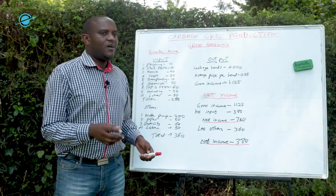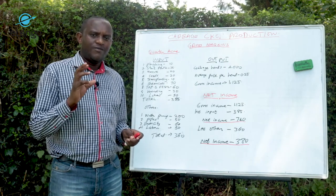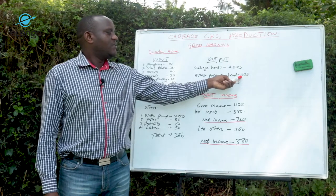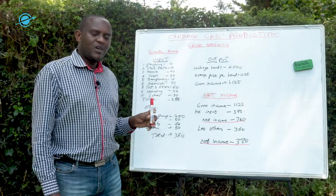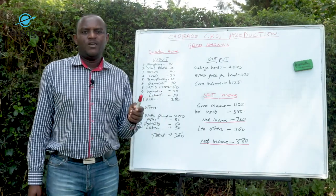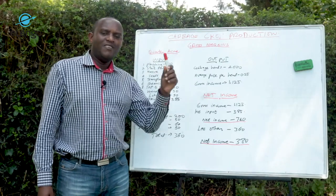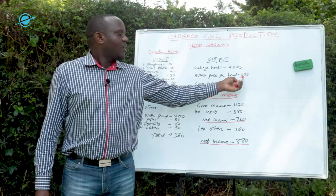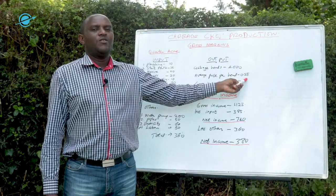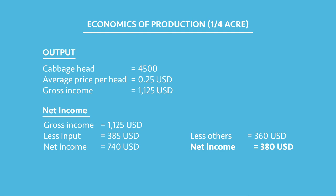There is also something important to consider. I've put the average price per head at $0.25. If you do good timing — for example, by doing irrigation so your cabbage is ready when supply in the market is low, or by planting early so your cabbage enters the market before others — you can fetch a good price. In some instances, you may sell as high as $0.60, or $0.40, or $0.30. I've put $0.25 as the low end, but most of the time you'll sell for more.